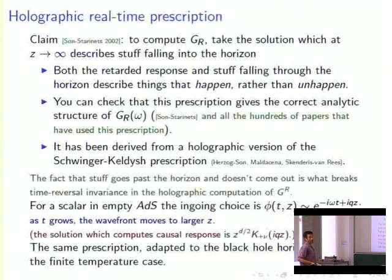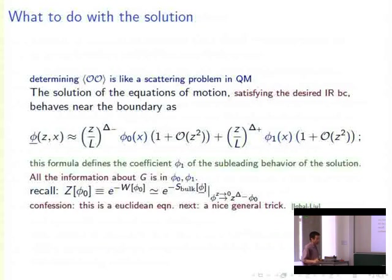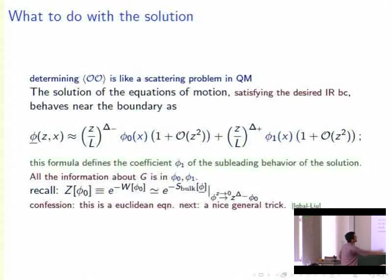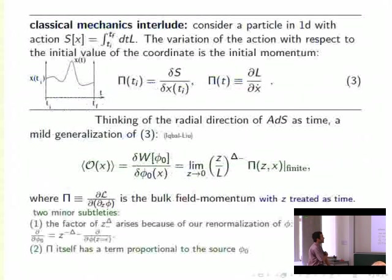Holographically, computing a retarded Green's function means choosing the solution that is infalling at the horizon — stuff falls into the horizon, measuring the causal response. Once you've determined which solution satisfies the correct infrared boundary condition, expand the solution near the boundary z→0: it's a linear combination of z^Delta_- and z^Delta_+ terms with coefficients A and B defined by the equation. All the information about the Green's function is in those coefficients. A slightly better trick: go back to Landau and Lifshitz's classical mechanics book.